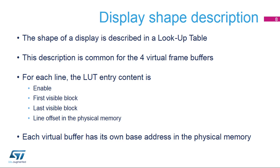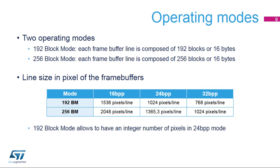Each virtual buffer has its own base address in the physical memory. The CHROM GRC runs with two operating modes: 192 blocks per line mode or 256 blocks per line mode. The 192 blocks per line mode is useful as it allows an integer number of pixels per line when the frame buffer color mode is 24 bits per pixel.